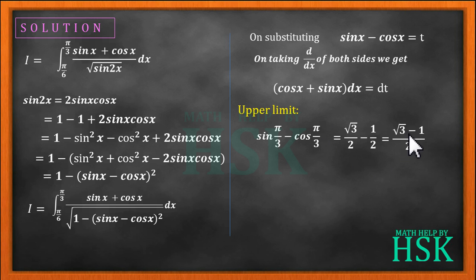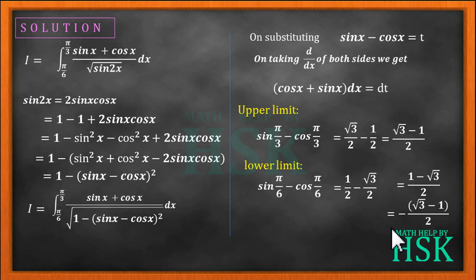The value of lower limit will change to sin pi by 6 minus cos pi by 6, equal to 1 by 2 minus root 3 by 2 or 1 minus root 3 by 2 or minus root 3 minus 1 upon 2.